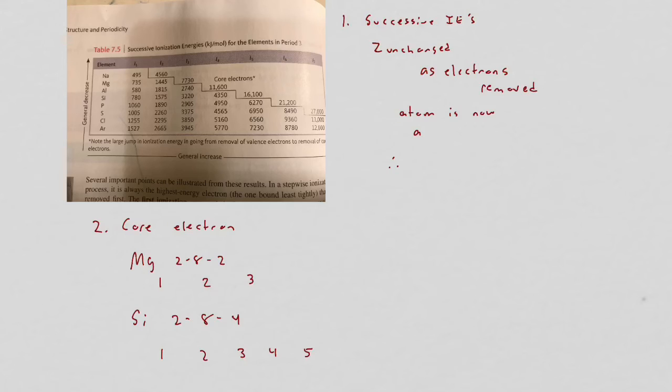Let's take a look at magnesium or silicon. If you look at magnesium, the first ionization energy is 735, the second one goes up. If you look at silicon, you can see the trend: 780, 1575. There's an increase in ionization energy as you remove successive electrons.